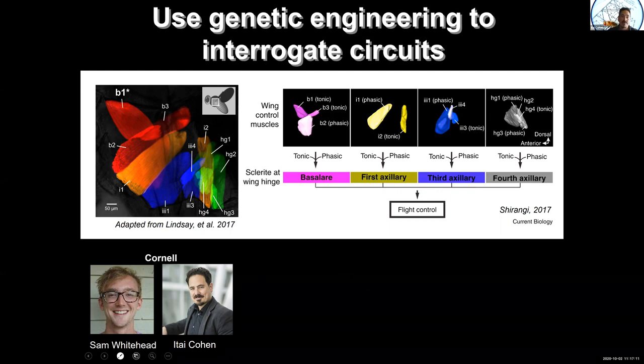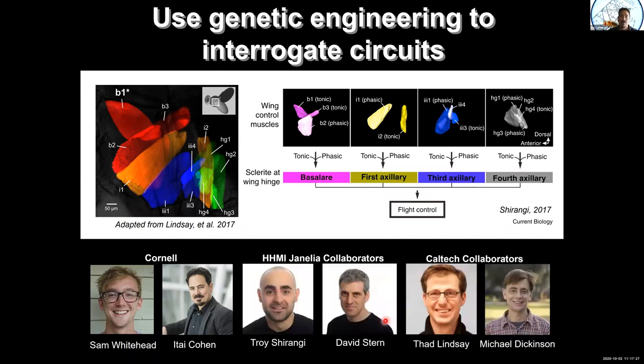In order to do this, we're going to use some genetic engineering and try to interrogate the circuits that are responsible for these flight perturbation corrections. This is really work that was started in my lab by Sam Whitehead. Everything I'm going to show you here is completely due to his amazing efforts and the fantastic collaborations that he's been able to spawn. In this particular case, we're working with folks from the Howard Hughes Medical Institute and from Caltech. This is David Stern and Michael Dickinson's lab. David is a world expert in the neuroscience of courtship behavior. Michael Dickinson is, I'd call him the 800 pound gorilla in the fly world, except he's so nice that he's the 800 pound nice person in the fly world, just an amazing individual and a true inspiration.